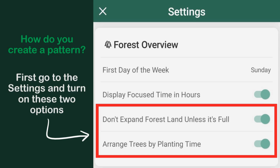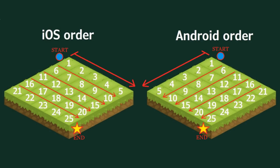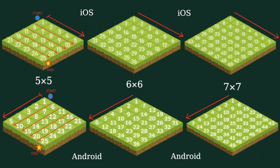This will make your trees align side by side in chronological order. As you can see, the direction changes from Android to iOS, one mirroring the other. This same logic applies to all grid sizes. Trees will be planted next to each other in this order once the pattern is full, each operating system in the corresponding direction.